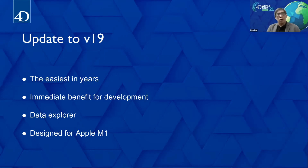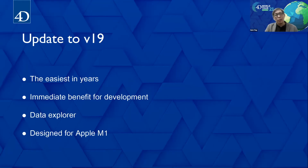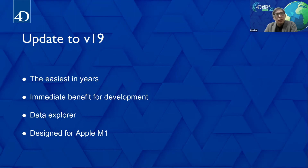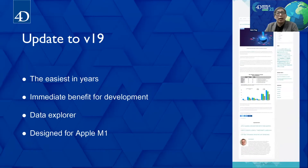The transition to V19 is almost transparent for applications already in V18. One essential point to mention: V19 allows native compilation on the new M1 processor architecture proposed by Apple. This has been a lot of work by 4D engineering, but from the developer's point of view it is completely transparent, except for a preference for the choice of compile target. Developers have already adopted this version for the M1 processor, and the feedback is amazing, as expressed by one of our major customers on our blog.